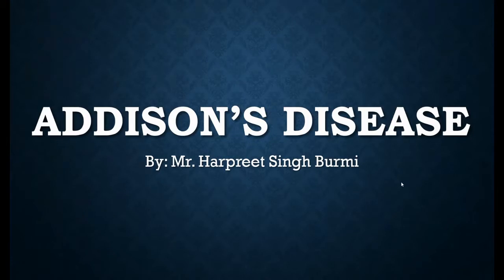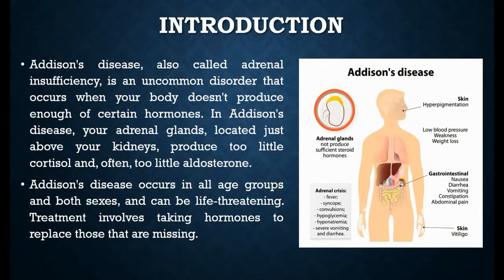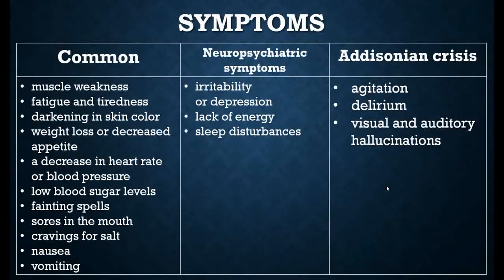Welcome back students. The next topic for the endocrine system is Addison's disease. Addison's disease is a disease which occurs when there is a deficiency of your adrenal hormones. It is an uncommon disorder in which the adrenal glands, located above the kidneys, produce too little cortisol. Addison's disease can occur in any age group and in both sexes, but if untreated it can be life-threatening. Treatment involves taking hormones to replace those which are missing.